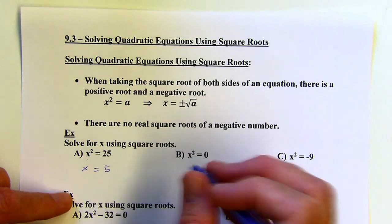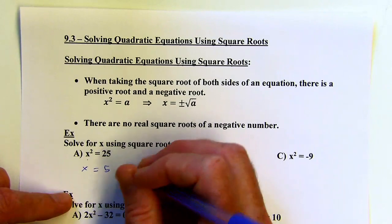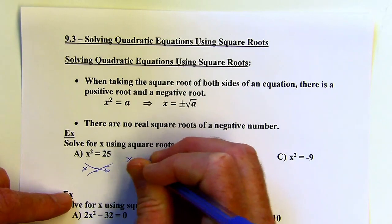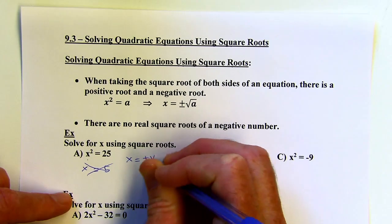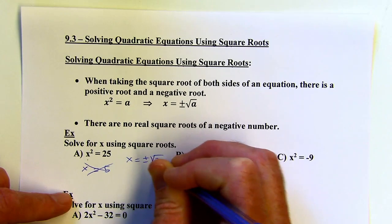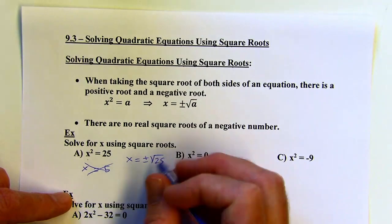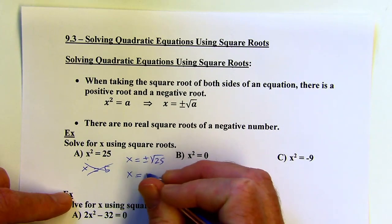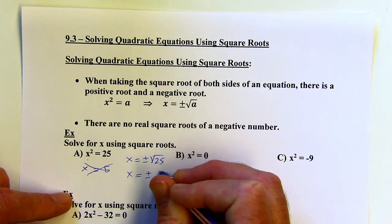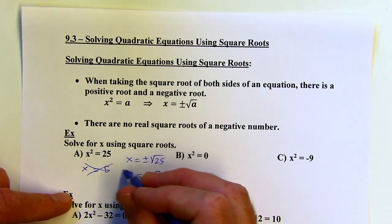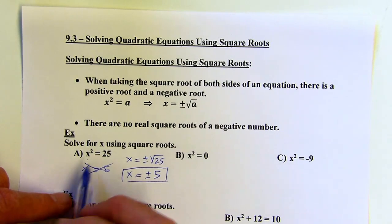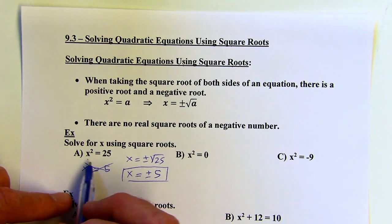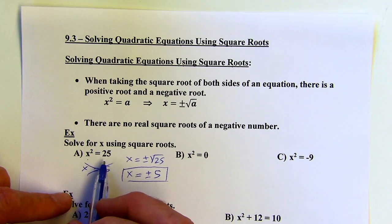What I actually want to do is take plus or minus the square root of 25. So the square root of 25 is 5, giving plus or minus 5. That makes sense because 5 times 5 is 25, but also negative 5 times negative 5 is 25.